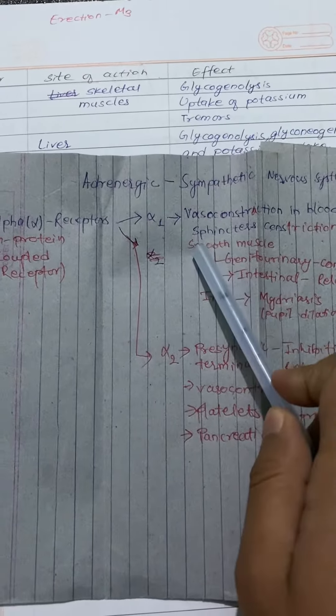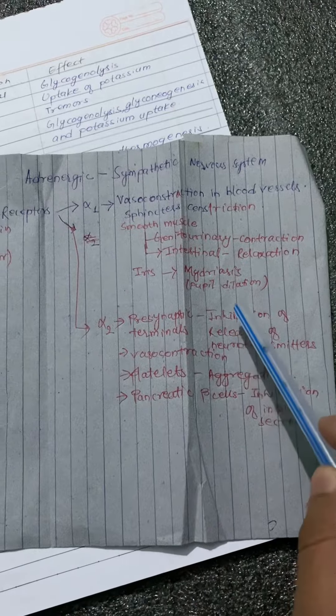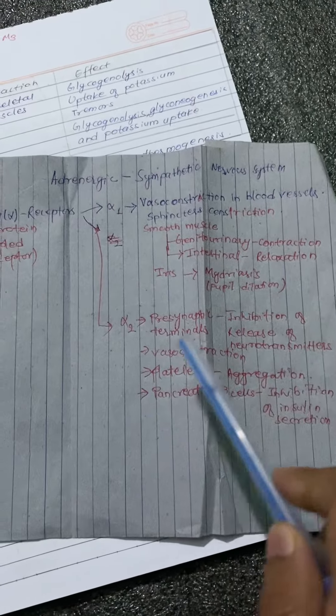The stimulation of alpha 1 receptor causes vasoconstriction in blood vessels. It causes sphincter constriction. It causes contraction in the genitourinary smooth muscles. It causes relaxation in intestinal smooth muscles. It causes pupil dilation in iris, which is mydriasis.